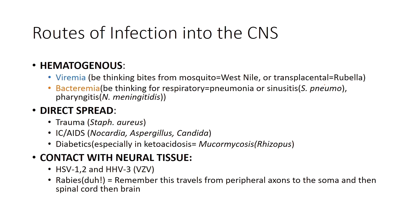Strep pneumo is the most common cause for adults and teenagers. For pharyngitis leading to meningitis, think Neisseria meningitidis rather than strep pneumo — strep pneumo doesn't usually cause pharyngitis. If an 18-year-old had pharyngitis, now has meningitis symptoms, and was in close contact with someone else with meningitis, that points to Neisseria meningitidis. Keep that association in mind when reviewing stems.